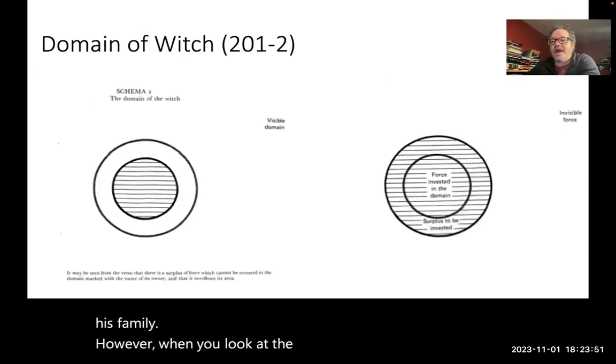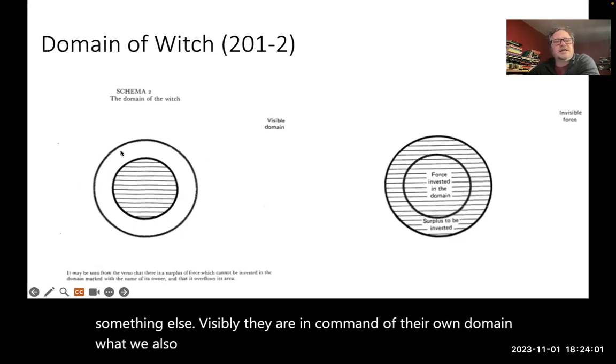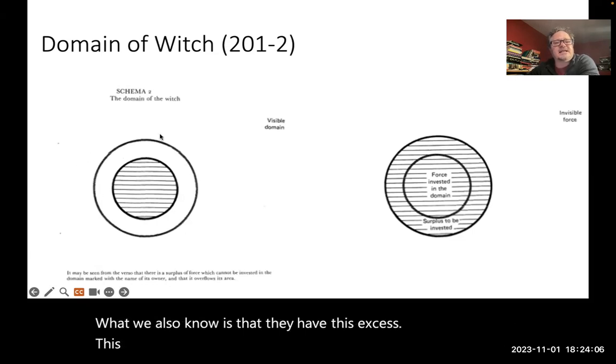However, when you look at the domain of a witch in 201-2, we see something else. Visibly, they are in command of their own domain. What we also know is that they have this excess. This is an excess that just freely circulates. You don't know what to do with it.